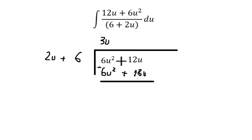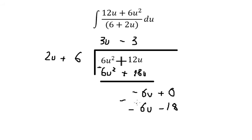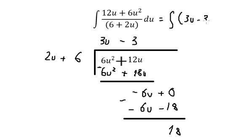After subtracting, we get 12u minus 18u, and continuing the long division we arrive at a remainder of negative 6. We multiply with negative 3, combining the equations together, and we get 18. So after the long division the integrand becomes 3u minus 3 plus 18 over (6 plus 2u) du.